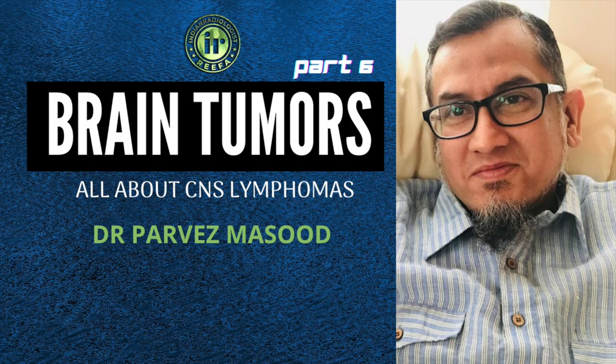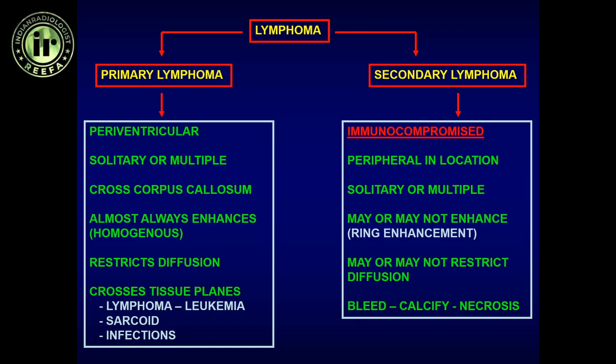Let's move on to the lymphoid cell lines. When we talk about lymphoma, there are two forms: primary lymphoma, where there is no associated lymphoma anywhere in the body and the brain is the first area to be involved; and secondary lymphoma, where there is some other entity — a diffuse lymphoma, an immunocompromised state, or some underlying lesion associated with it.